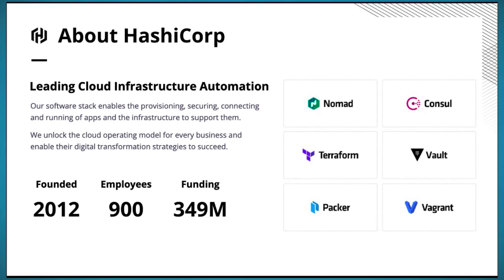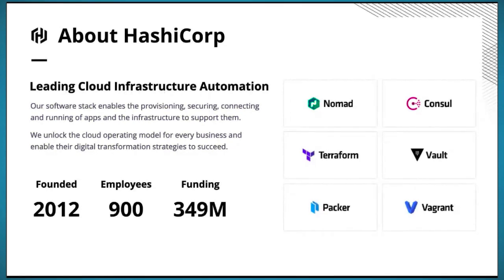That cloud operating model is the mechanism by which we help organizations deliver on their digital transformation strategies. Very simply, we aim to enable folks to provision, secure, connect, and run applications on any infrastructure at any time and at any scale. The company was founded in 2012 by Armand and Mitchell, who came from an application background and saw the challenges emerging in this multi-cloud world. They started developing these tools out of necessity and to avoid some of the complexities that mire a lot of organizations down.